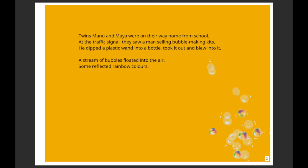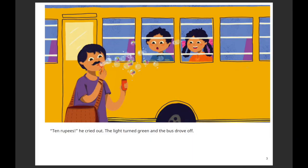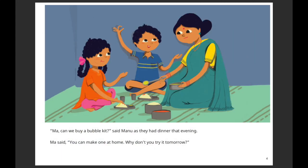Twins Manu and Maya were on their way home from school. At the traffic signal they saw a man selling bubble-making kits. He dipped a plastic wand into a bottle, took it out, and blew into it — a stream of bubbles floated into the air, some reflecting rainbow colors. 'Ten rupees, ten rupees!' he cried out. The light turned green and the bus drove off.